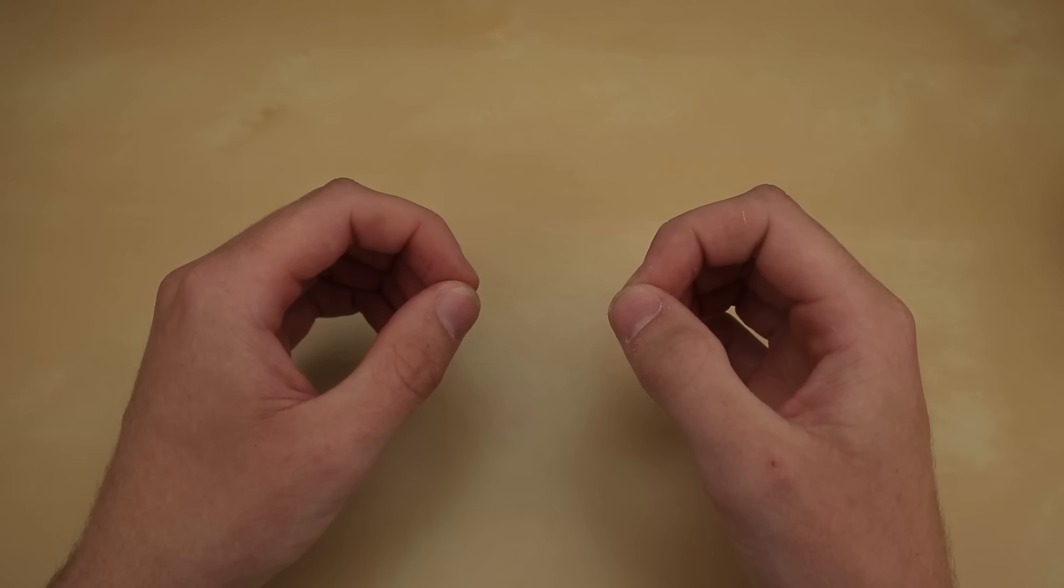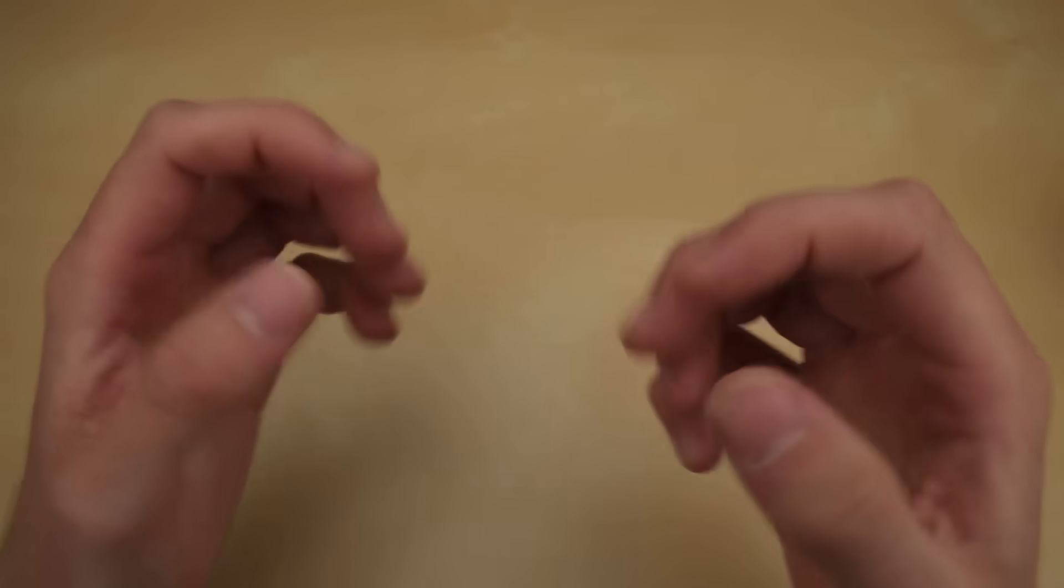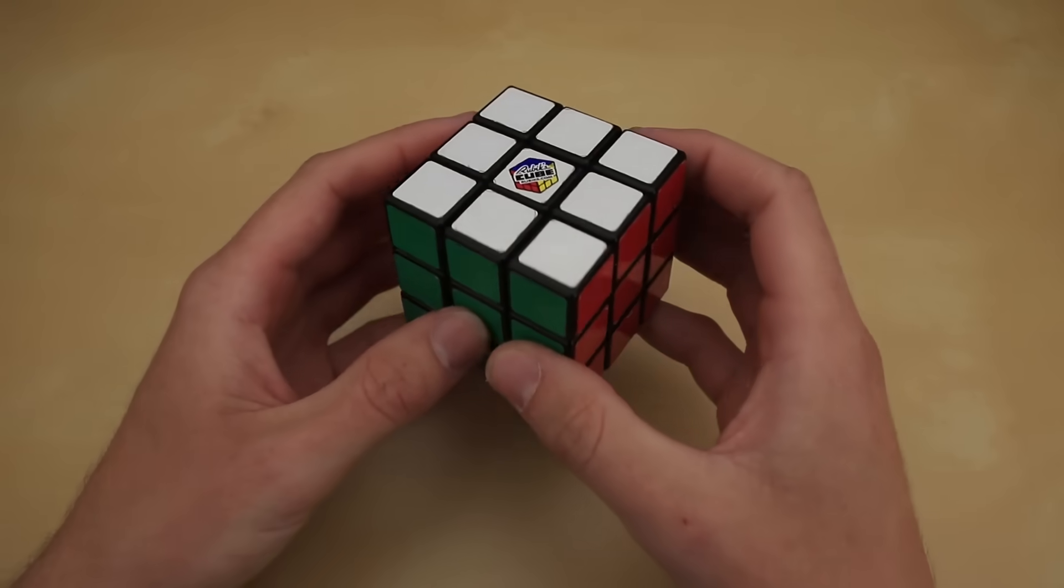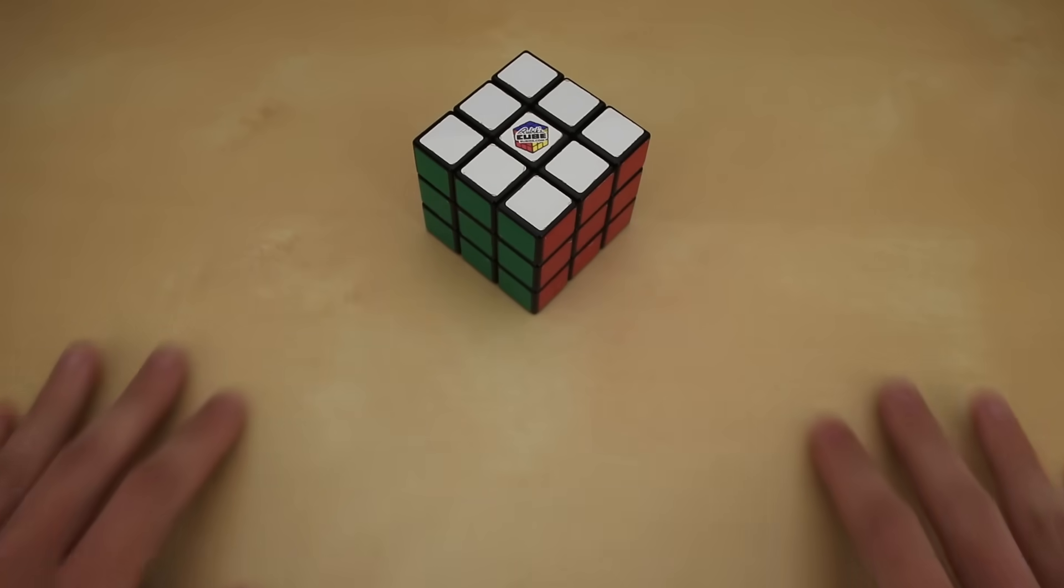So this all raises the question: if those are among the lightest 3x3s that I could possibly make, then how would you go about making a super heavy 3x3? What is the theoretical heaviest possible Rubik's Cube and how heavy of one can I make in this video? Let's find out.